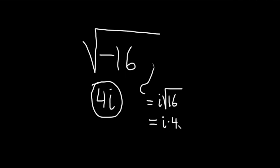But then no one leaves their answer like this. They usually put the i at the end. So you basically write this as 4i. So that's how you can do it two different ways.